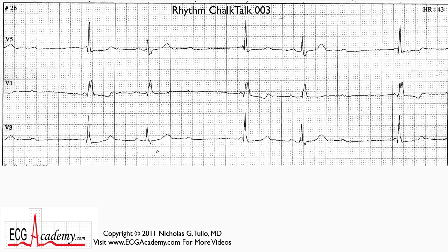Let's get to this. Remember to look at the forest. The first thing I see is that the QRSs are irregular. Look for a pattern — it turns out that these are regularly irregular with a group of two, and then a little pause, and then another group of two. And there's another QRS out here, and you might think there might be a group of two, but you don't know for sure.